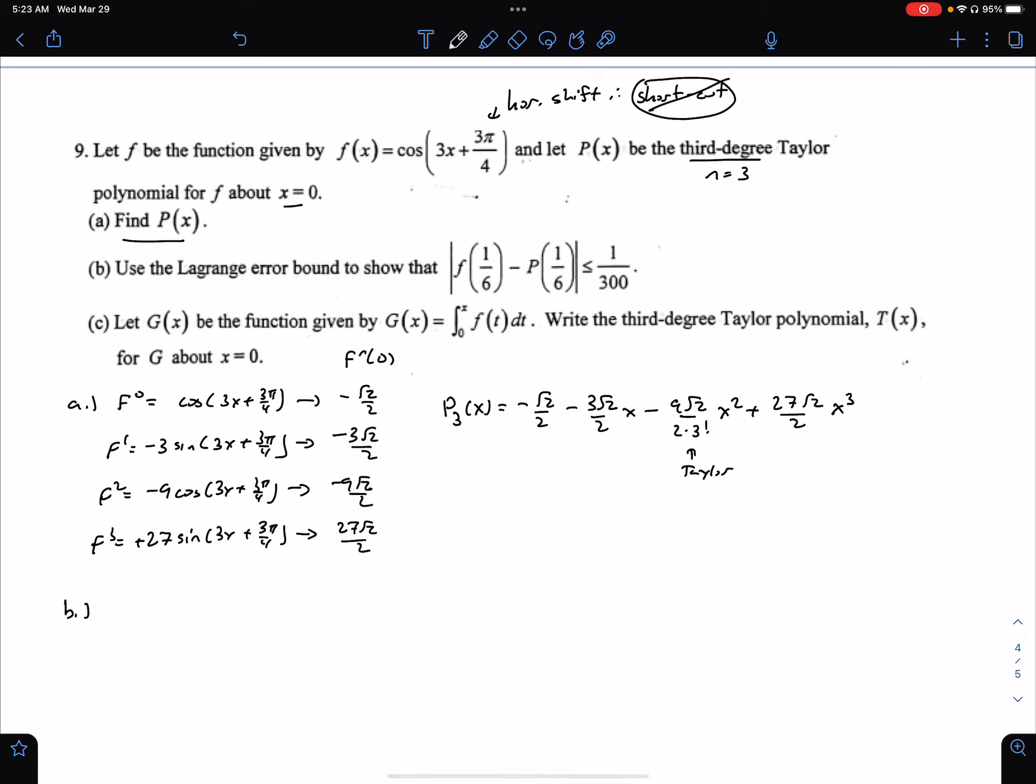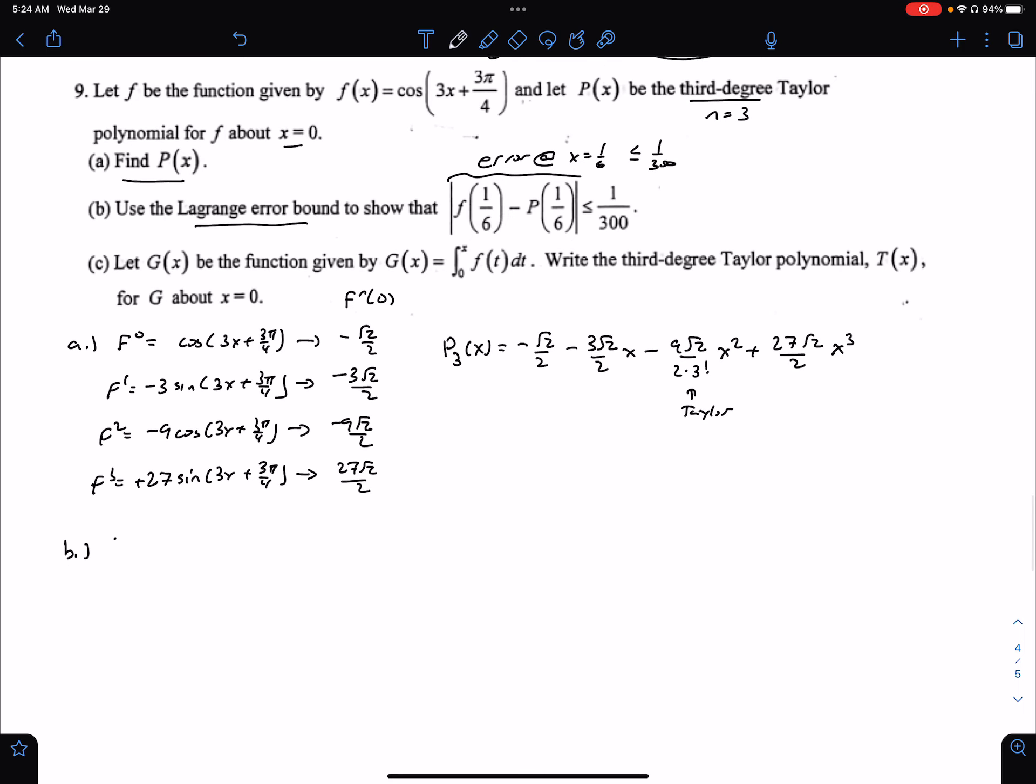Now part B, we're asked, use Lagrange error bound to show that our error here, this is our error, at x equals 1/6 is less than or equal to 1/300. Well, this is Lagrange, so Lagrange says we have to look at the next term. So let's review Lagrange.